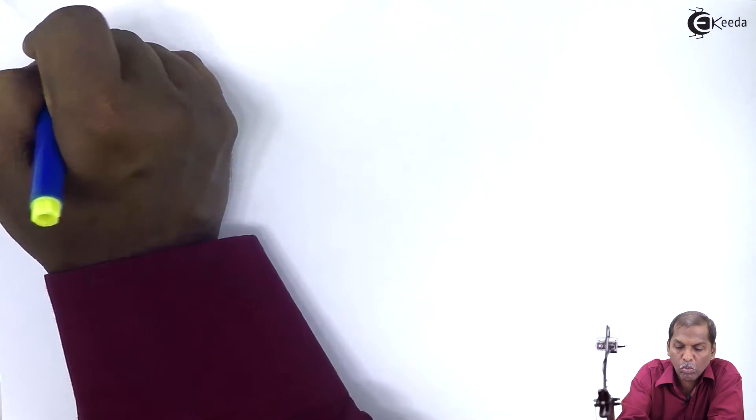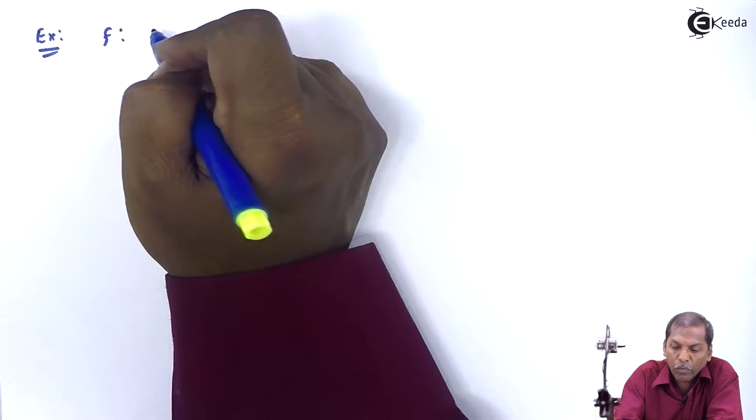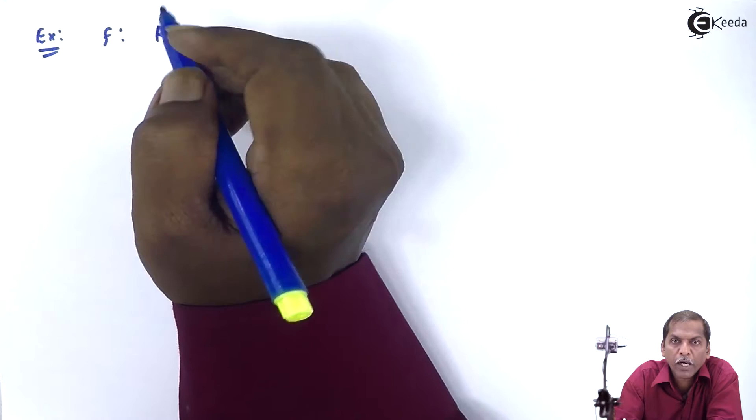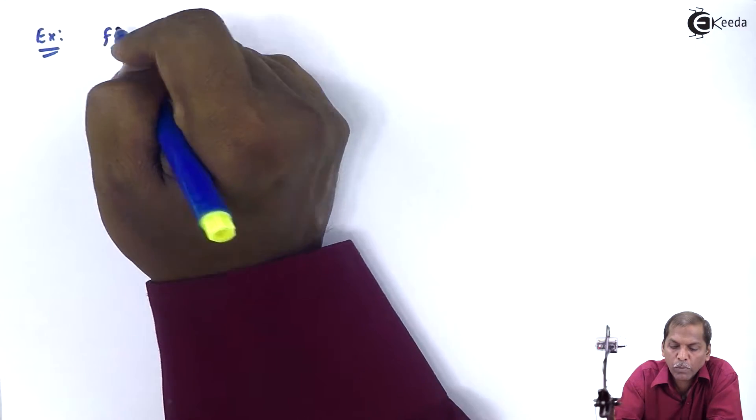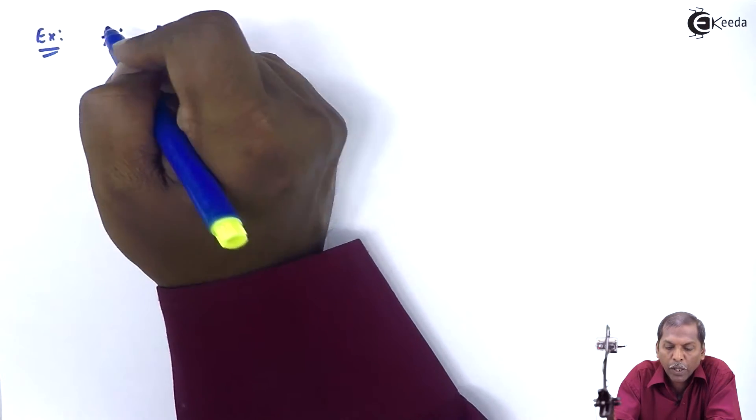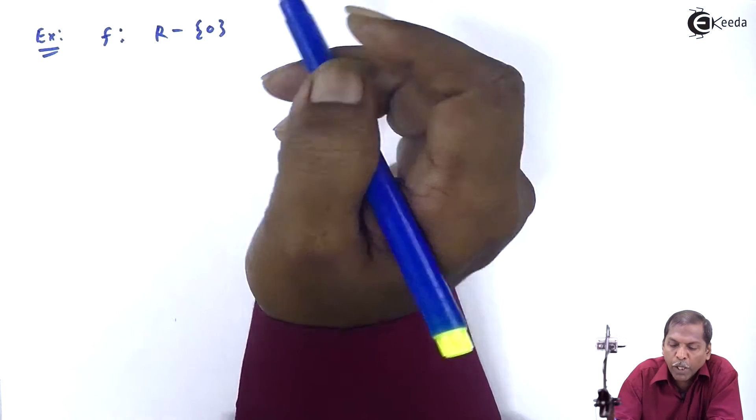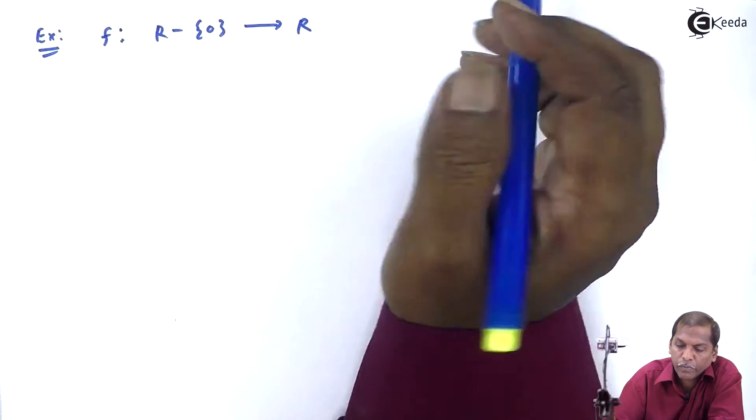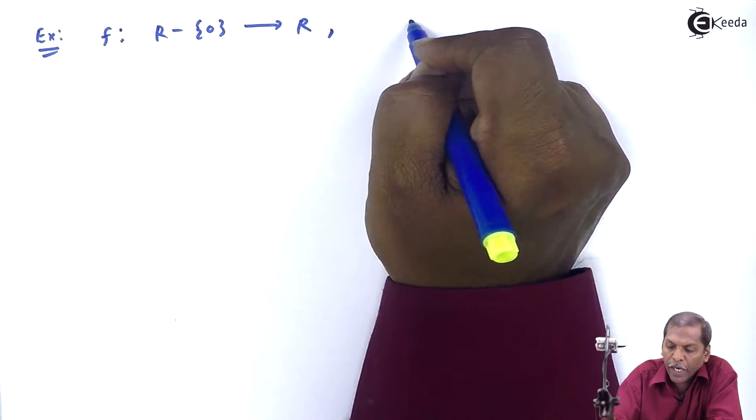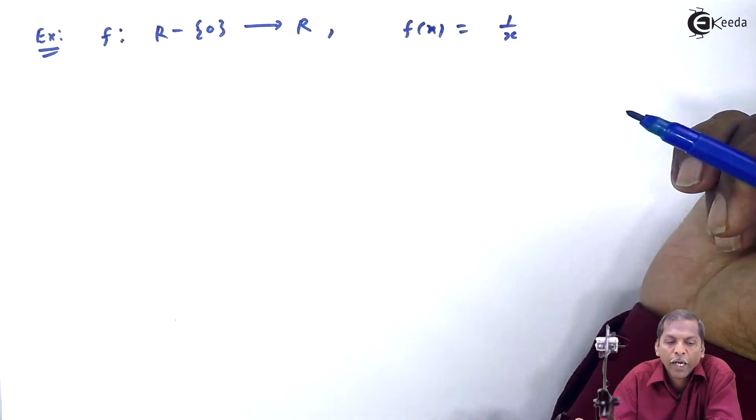Example: Let us consider function f from set of real numbers minus curly bracket 0. It means domain is the set of all real numbers except 0 to set of real numbers defined as f(x) is equal to 1 upon x